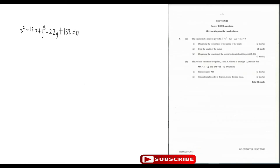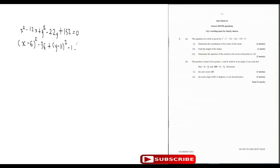Now we can go ahead and factorize this. For x squared minus 12x, we take half of 12 to get 6, so it's (x minus 6) squared plus 36. For y squared minus 22y, we divide 22 by 2 to get 11, so it's (y minus 11) squared, then we subtract 36, subtract 121, plus 152, equal to zero.